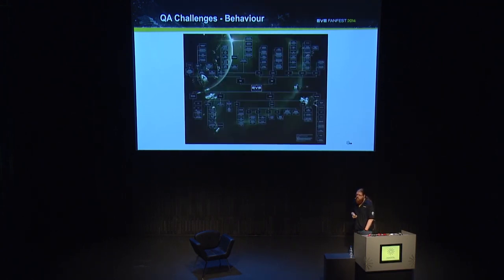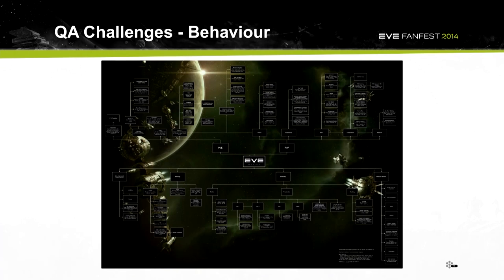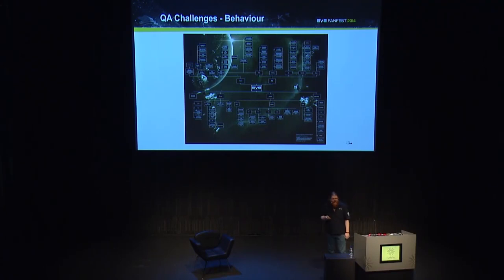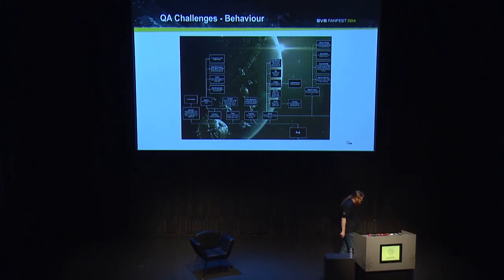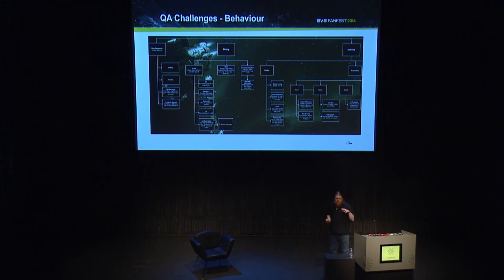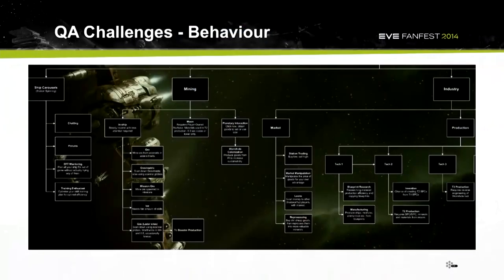We also have behavioral challenges. There are so many things to do in EVE that you can't fit them onto one slide in a readable sense. With that many edge cases and odd behaviors, it can be tough to nail down exactly what players are going to do when a feature hits TQ. Considering all of those behaviors is vital, even in the smallest way, because it informs your test planning — and test planning is definitely one of the most important parts of whole team quality.